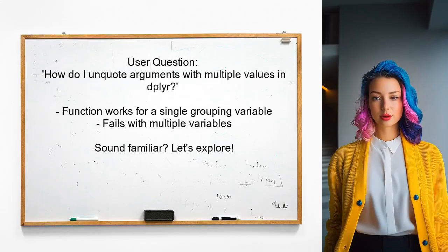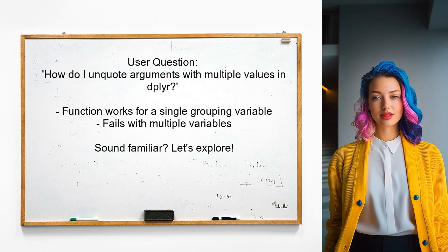Let's take a look at a specific question from a user. They asked, how do I unquote arguments with multiple values in dplyr? They provided a function that works for a single grouping variable but runs into issues when trying to group by multiple variables. Sound familiar? Let's explore this together.